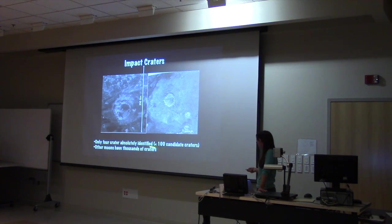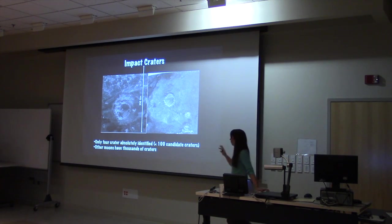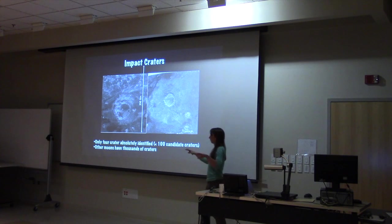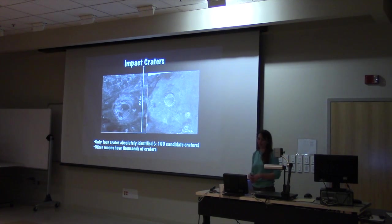Another indication that the surface of Titan is geologically young is that there are very few impact craters. This is an old slide. I made this one time ago, so I should probably double check. But when I made this slide, there were only four identified craters. And other moons around Saturn and Jupiter have thousands of craters. So that shows us that something is resurfacing Titan and its surface is very geologically young.